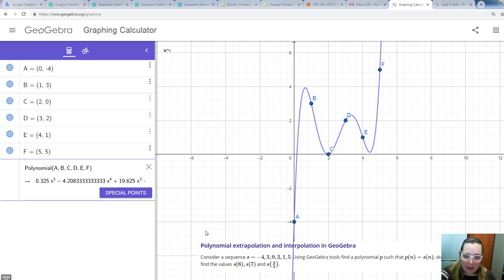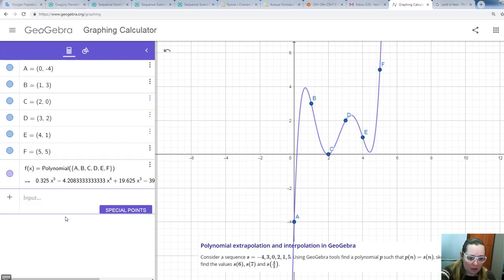And next step we need to extrapolate the polynomial to find S6 and S7. You see that GeoGebra called the polynomial by F. So we can use this to find F of 6, for example.